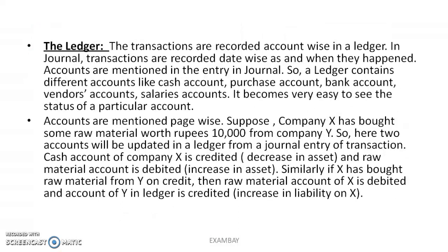Now moving to the ledger — in the ledger, transactions are recorded account-wise. Think of the ledger as a register. For example, if we have a Flipkart account on pages 70 to 75, all Flipkart-related entries go directly to those pages. That is account-wise entry, as opposed to the journal's date-wise entry. The ledger contains different accounts — cash account, bank account, vendor account, salaries account, and so on.